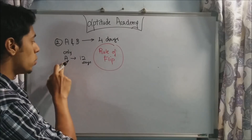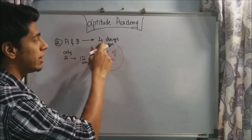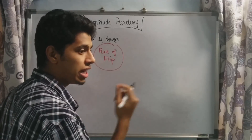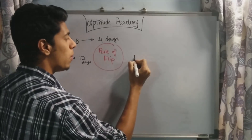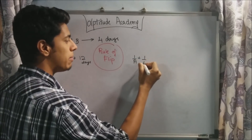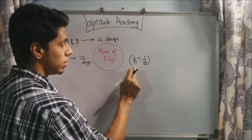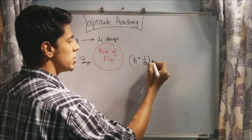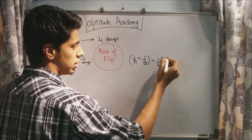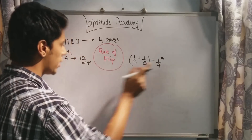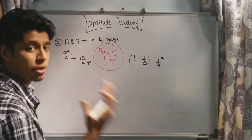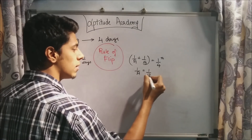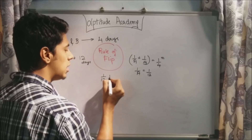Problem two says A and B complete a task in four days, whereas A alone takes twelve days. When both are working together, each contributes their individual work every day — A contributes one by a and B contributes one by b. Together they finish in four days, so by the rule of flip, every day they finish one by fourth of the work: one by a plus one by b equals one by four. Since A alone takes twelve days, by the rule of flip one by a equals one by twelve. Substituting: one by twelve plus one by b equals one by four.